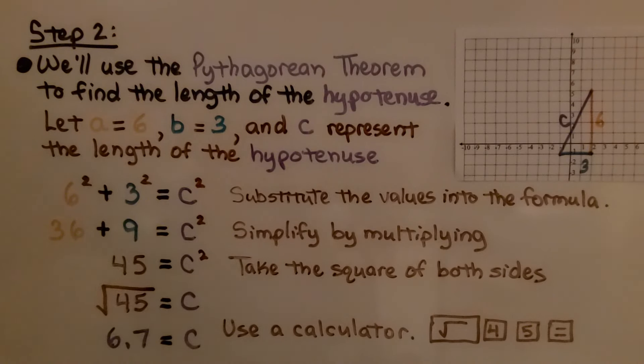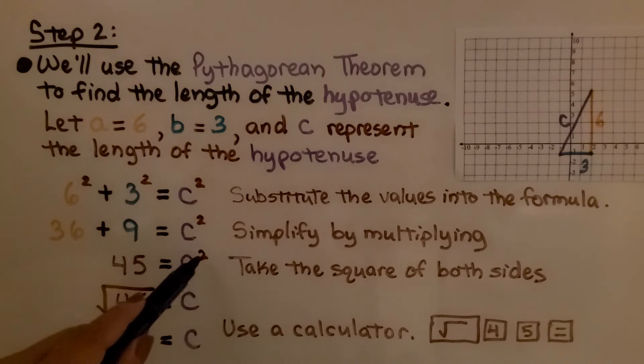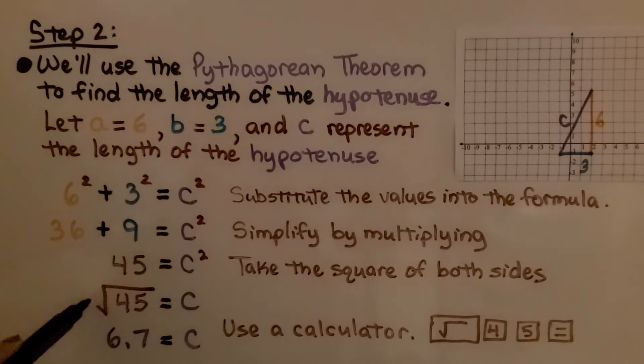Now, we take the square root of both sides. We remove this exponent from c by putting a square root symbol, a radical sign, around the 45. We can use a calculator to find the square root of 45. We hit the square root key, then 4, 5, and the equal sign. We get 6.7 and a longer decimal, but let's round it to the nearest tenth and leave it at 6.7, which means this is approximately c.